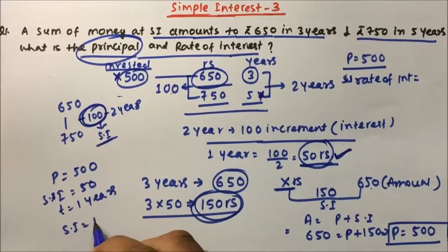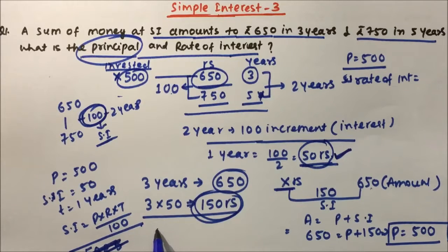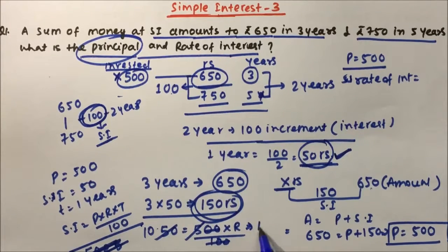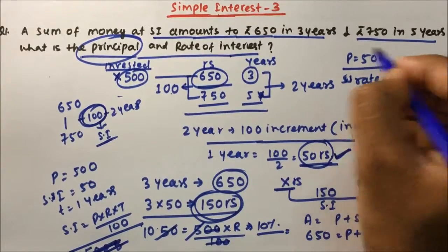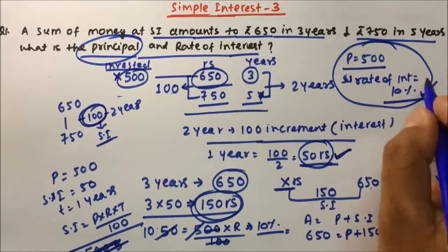Simple interest equals P × R × T divided by 100. Simple interest is 50 rupees, principal is 500 rupees, time is 1 year, divided by 100. Cancelling zeros, we get R = 10 percent. So the rate of interest is 10 percent. Principal is 500 and rate is 10 percent.